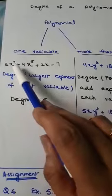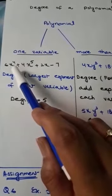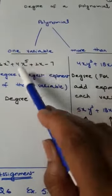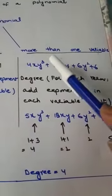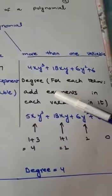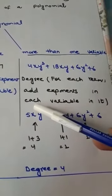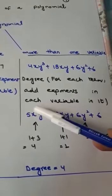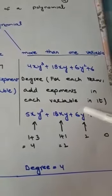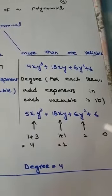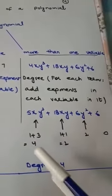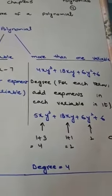A polynomial with one variable, the highest exponent is the degree of that polynomial. When we have more than one variable, we will add the exponents in each term. Now 1 plus 3 is 4, we will add the exponents in this term, similarly here and also here. Then among all these exponents we will find out the highest exponent, and that highest exponent is the degree.